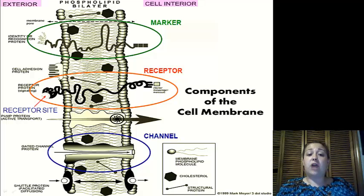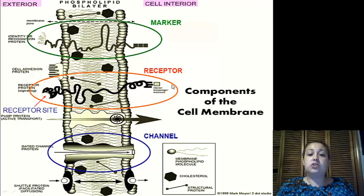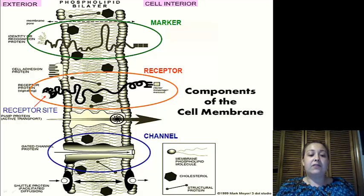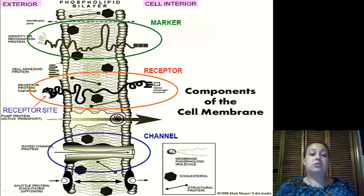Next for our receptor, we have a receptor site on the outside, and it sends a signal all the way through to release something inside that will cause the cell to do something. Finally, we have our channel protein, which are transport proteins, and it allows molecules to move through the membrane.